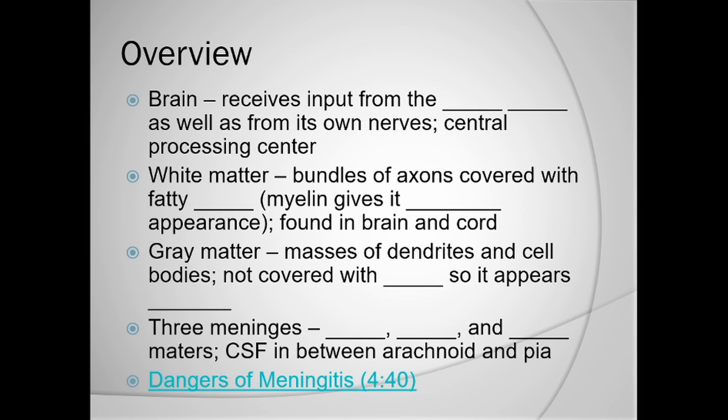There are two types of tissue in the nervous system: white matter and gray matter. White matter consists of bundles and clusters of axons — think of the axon like the trunk of a tree, with the dendrites being the branching extensions coming out of the central cell body. These are bundles of axons covered with fatty myelin. Myelin is a lipid-based compound, and whenever these axons are covered with it, the myelin gives them a white appearance. It is found in the brain and the cord.